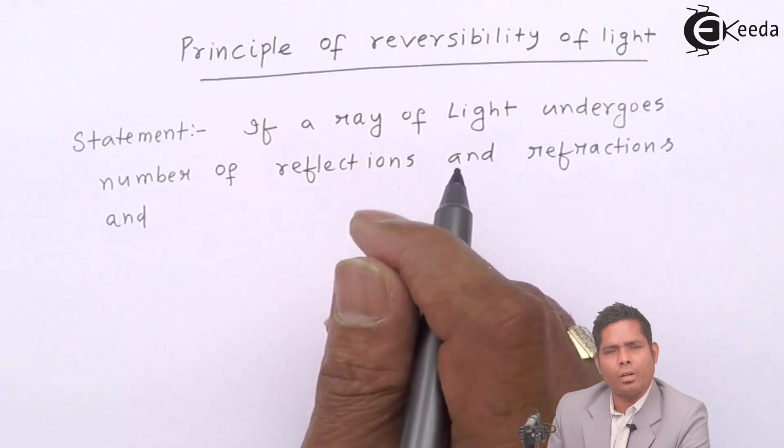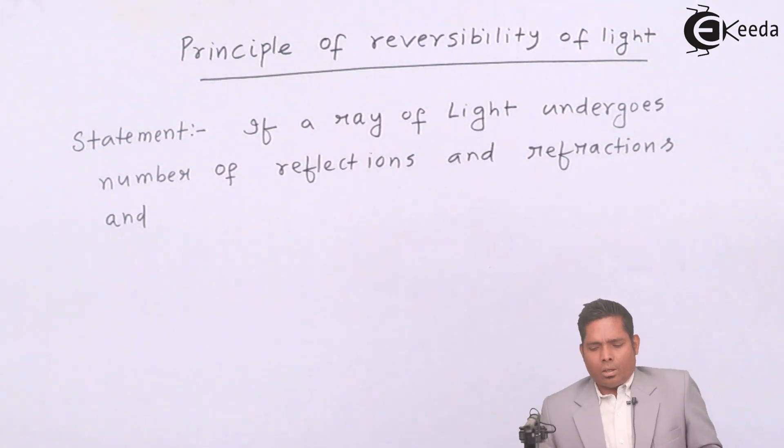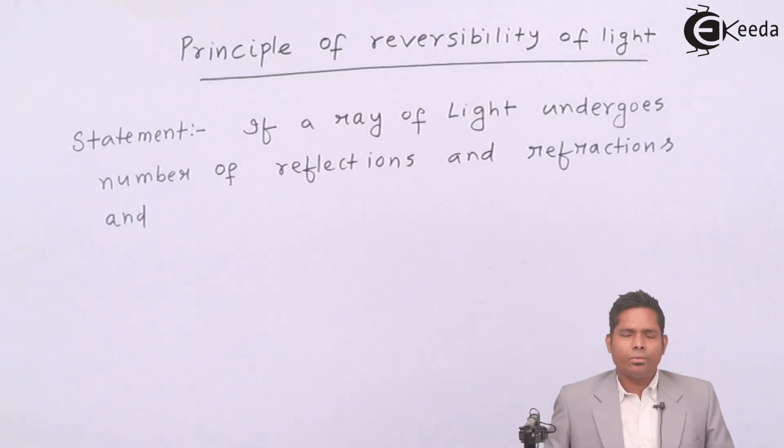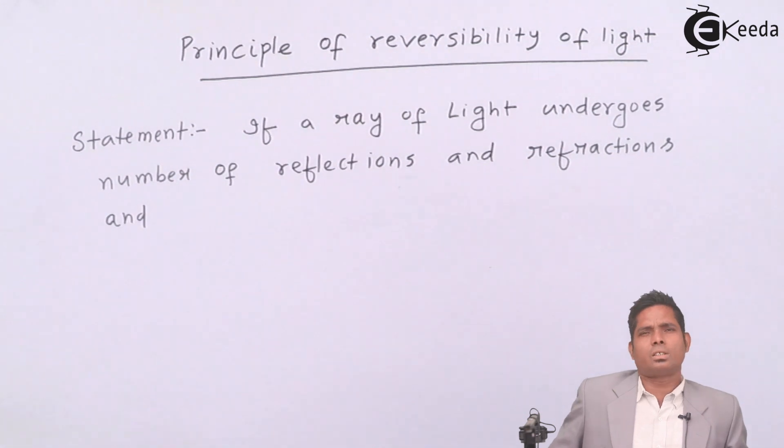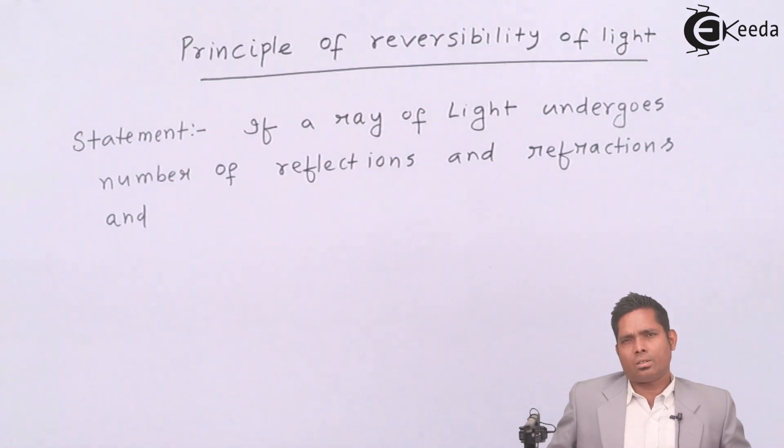If a ray of light undergoes a number of reflections and refractions, maybe reflections, maybe both, and if following certain paths, and if the direction of light is reversed, then it follows the same path it has travelled earlier.